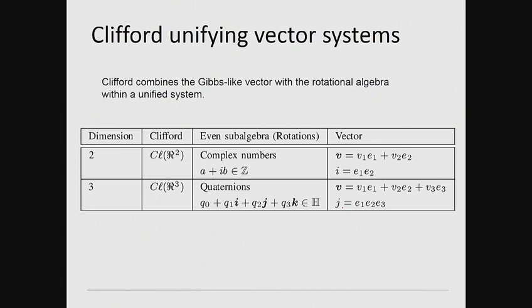We have showed how complex numbers and quaternions describe the rotational algebra for two- and three-dimensional space. And Clifford combines the Gibbs-like vectors with this rotational algebra within a unified system. That is, the rotation operators are provided by the even subalgebras acting on vectors in two or three dimensions, the rotation operators being isomorphic to the complex numbers and the quaternions.